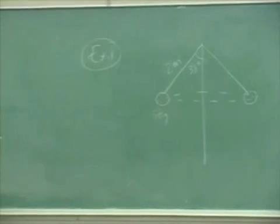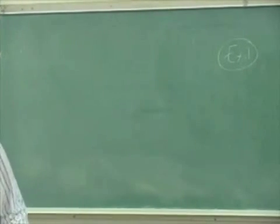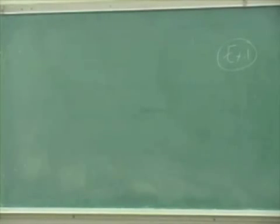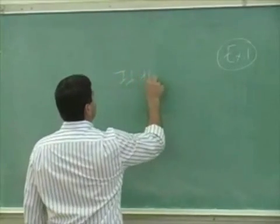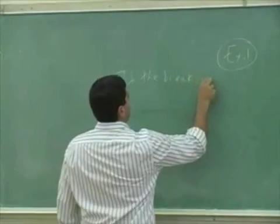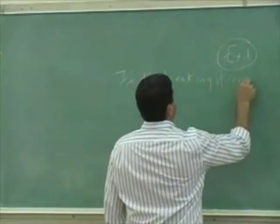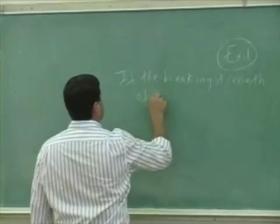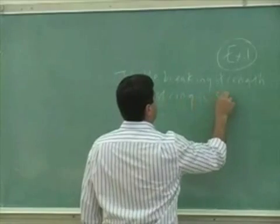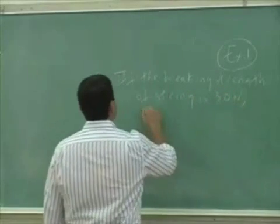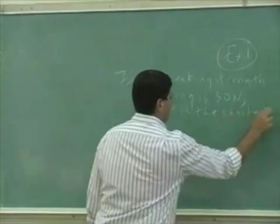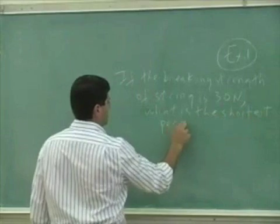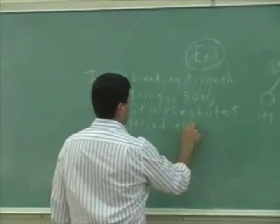That's kind of a twisted way of asking the question, I know. But we have a little twisted mind here in the physics department, making it a little harder for you to answer it. If the breaking strength of the string is 30 newtons, what is the shortest period of the ball?